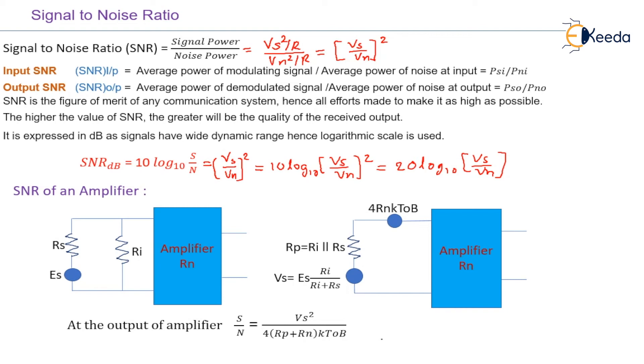So here Rp, that is parallel resistance, is considered. Rp basically is a parallel combination of Ri equal to Rs. You can write here Rp equal to Ri into Rs divided by Ri plus Rs. So that is a parallel combination.